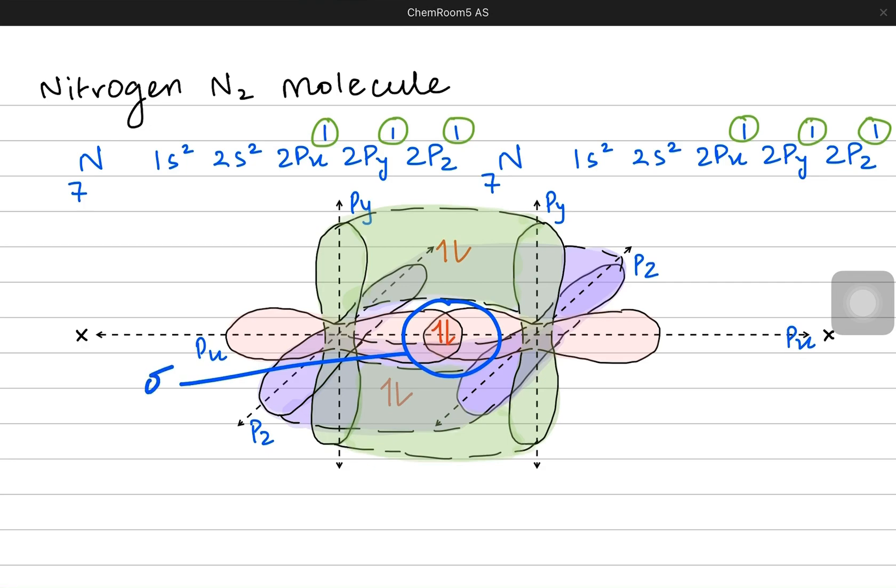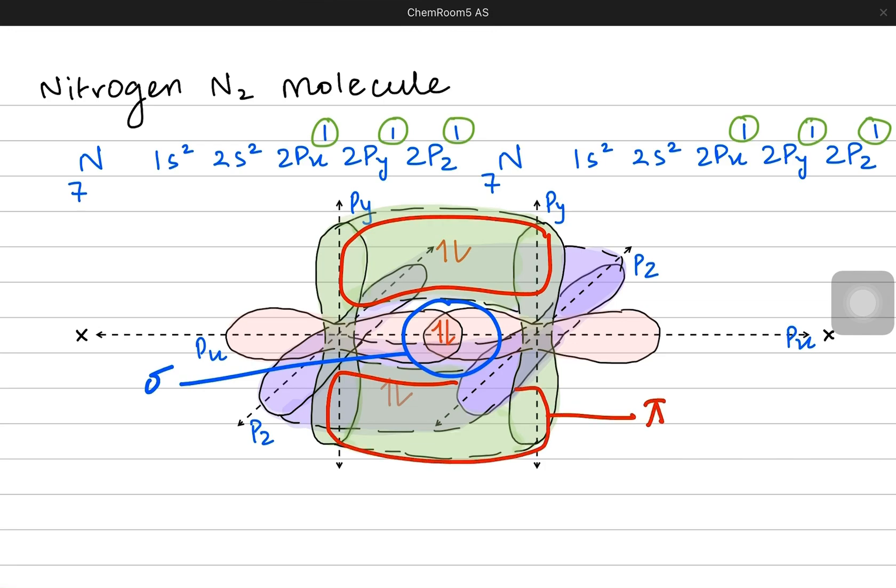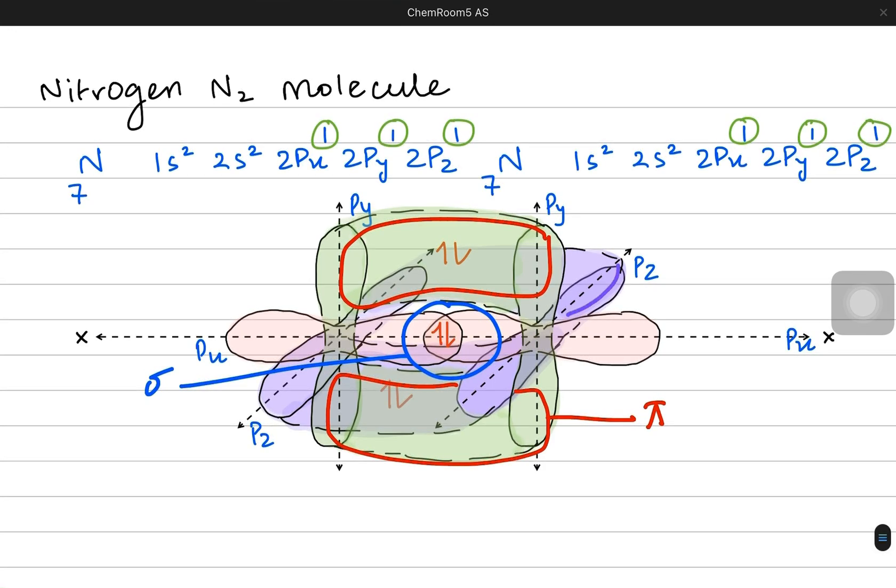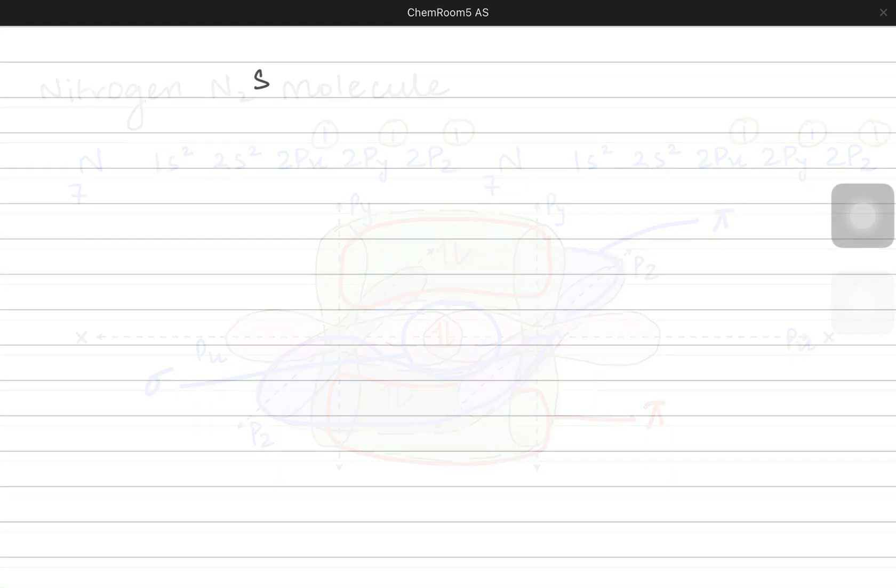We have one sigma bond represented by the pink region. We have one pi bond formed by the Py orbitals. This is the first pi bond by the way. It is on the y plane and then we have another pi bond, second pi bond formed on the z plane formed by the Pz orbitals. So it's one sigma and two pi. It's a total of three bonds.